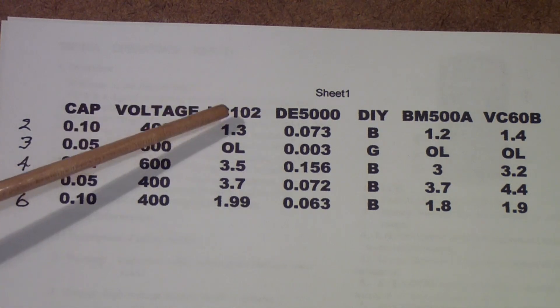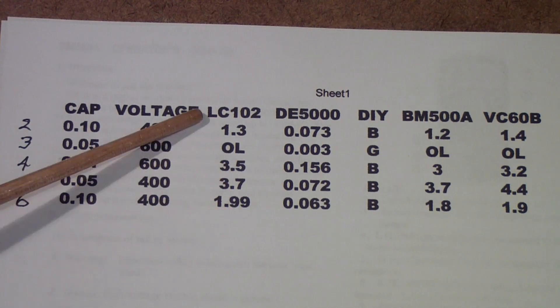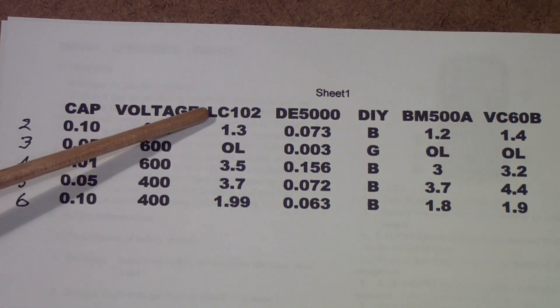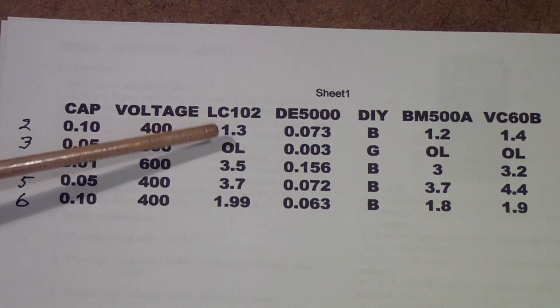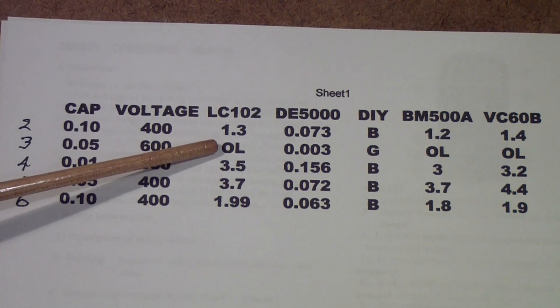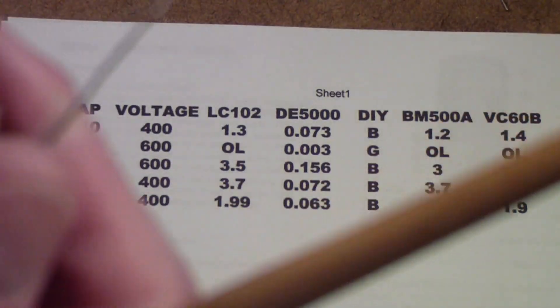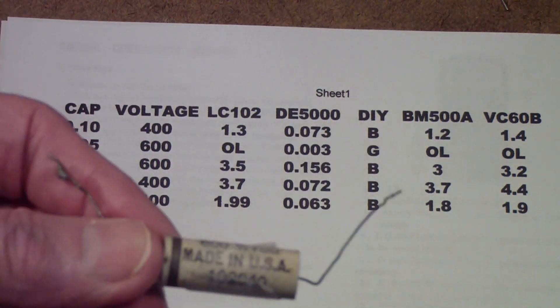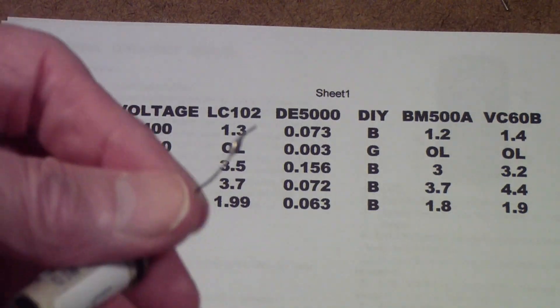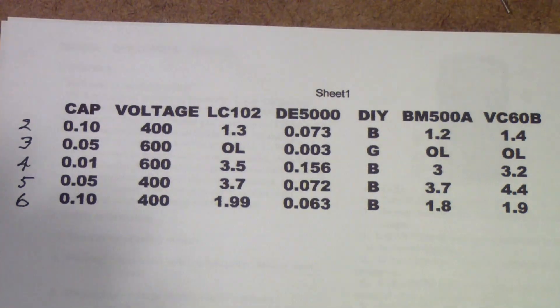The LC102, which I consider more or less my standard for capacitor testing, showed these readings for the leakage resistance of these capacitors, and this is all in megaohms. So 1.3 megaohms for capacitor number two. Capacitor number three shows overload, and capacitor number three is actually a pretty nice 0.05 microfarad 600 volt capacitor. It is out of a piece of vintage equipment - you can still see some of the solder on the end there - but it was a fairly well-made capacitor and it came out of a nice Hallicrafters receiver.